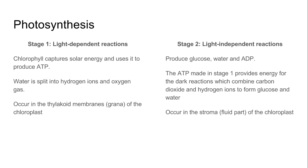Stage two is the light-independent reactions, where we produce glucose, water, and ATP. The ATP made in stage one provides energy for these dark reactions, as we call them, because this part doesn't require light. It combines carbon dioxide and hydrogen ions to form glucose and water, and this occurs in the stroma — the fluid part of the chloroplasts.